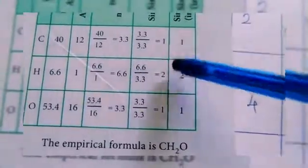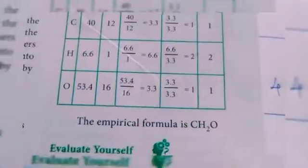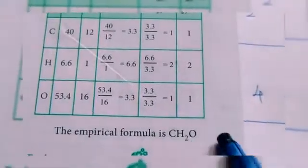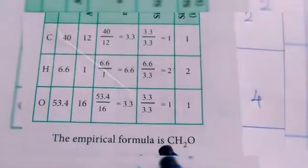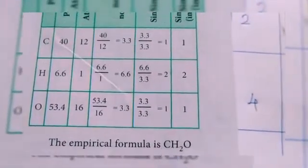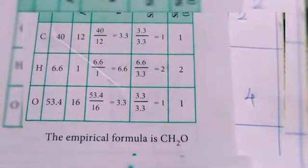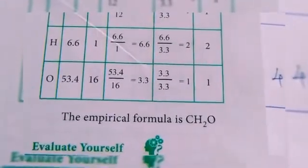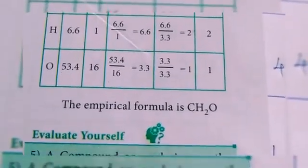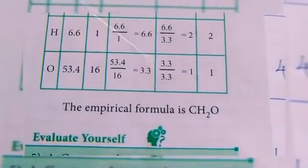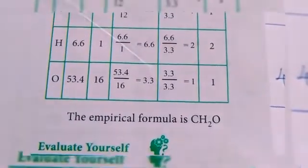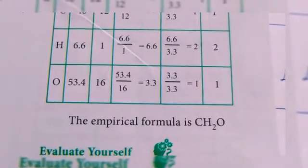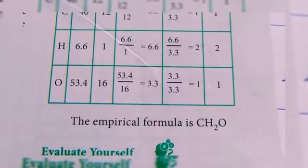The simplest ratio gives us whole numbers. We write the empirical formula with carbon, hydrogen, and oxygen with their respective subscripts.